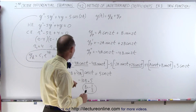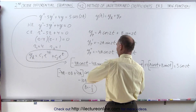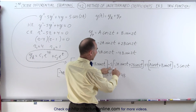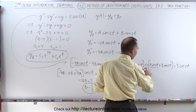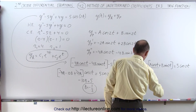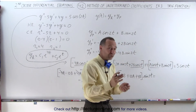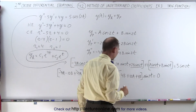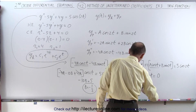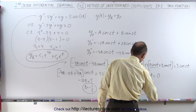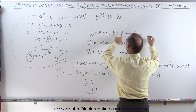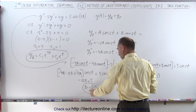Now we group all the sine terms together. We get minus 4B plus 10A plus 4B, times sine of 2t, equals 0. The minus 4B and plus 4B cancel, giving 10A equals 0, so A equals 0. The undetermined coefficient A is actually equal to 0, so the particular solution is y_p equals minus 1/2 times sine of 2t.